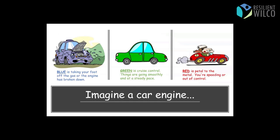Okay, so think of a car engine. We're going to start with green right in the middle. Green for a car engine is like cruise control. Things are going really smoothly. It's a steady pace. All is good. The car is healthy. Now if you think about blue, blue is taking your foot off the gas or the engine is broken down. Things aren't going so good. Look at that poor car is very upset on the left side of the screen. And red, pedal to the metal. You're speeding or out of control.